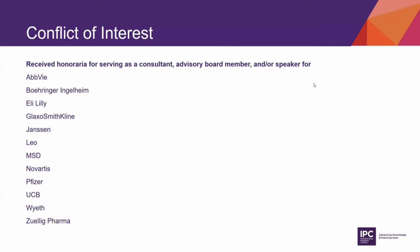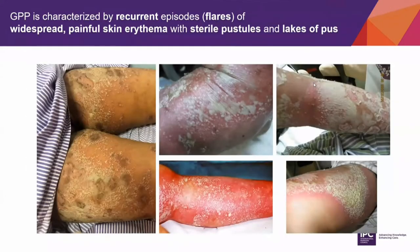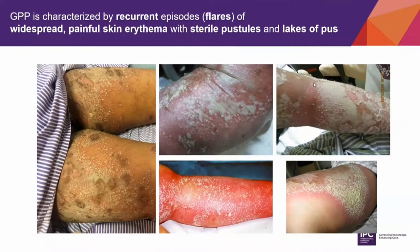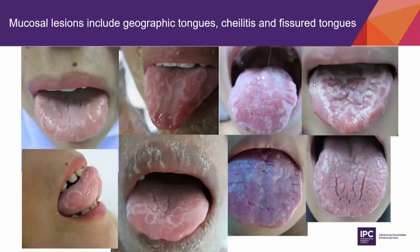These are my conflicts of interest. We already know that generalized pustular psoriasis, or GPP, is characterized by recurrent flares of widespread painful skin erythema with sterile pustules which may coalesce to form lakes of pus, as seen here. Mucosal lesions include geographic tongue, cheilitis, and fissured tongue.